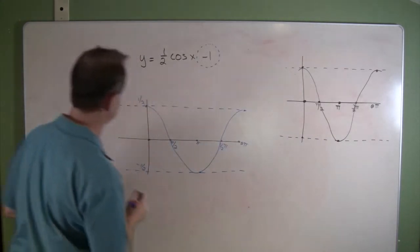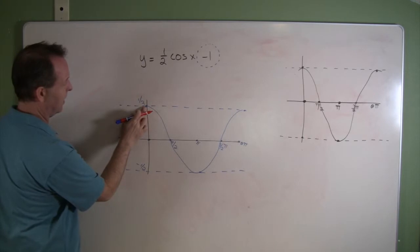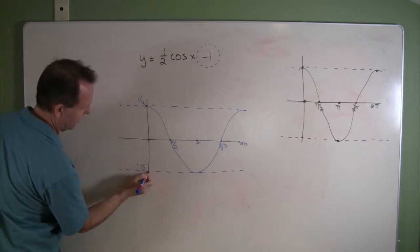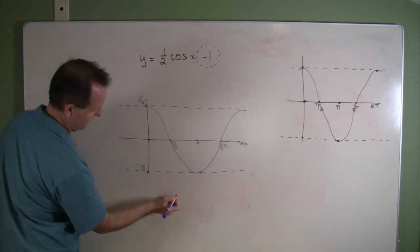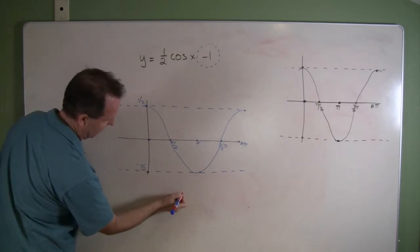So I'm going to have now, as its starting point, this point, which is a positive one-half. Now this point becomes a negative one-half. This point, which was at zero, now comes down here at negative one.